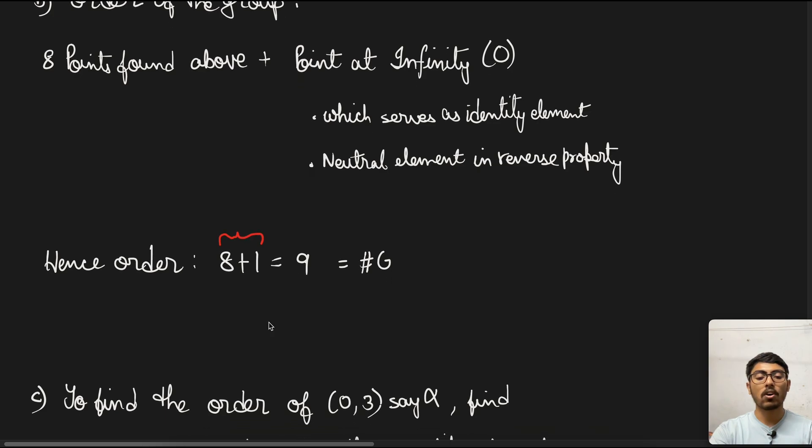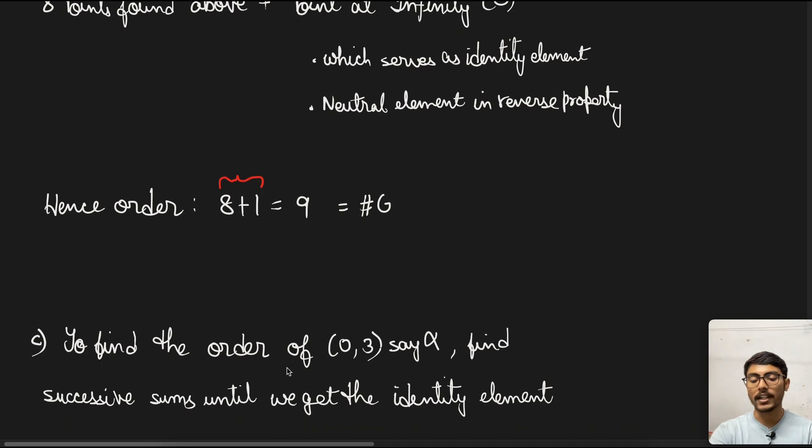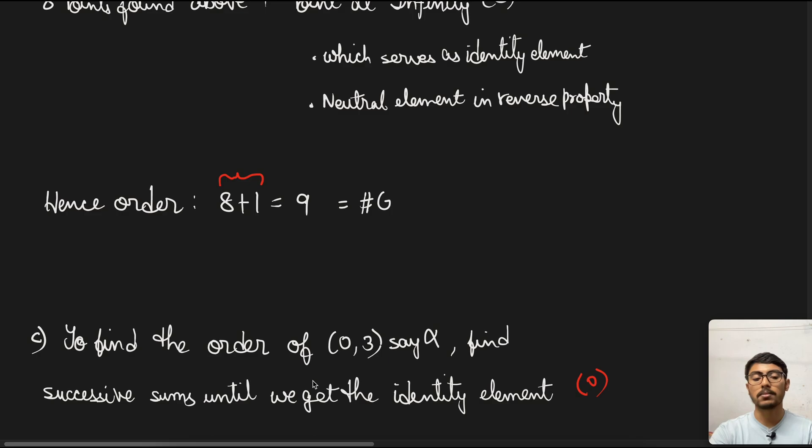We added 1 and 8 because order of group means the total number of elements present in the group. Next, we come to the order of (0,3), which is an element say alpha. Order of an element means the number of other group elements that can be generated using this particular element. First, we find the successive sums until we get the identity element.